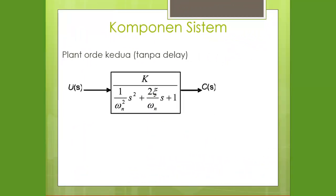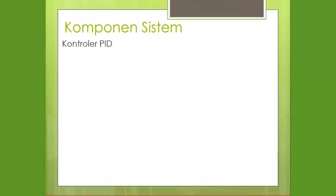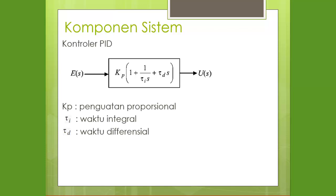Plan order kedua tanpa delay sebagaimana pada gambar, bloknya adalah K per (1/ωn² · s² + 2ζ/ωn · s + 1), dengan input U(s) dan output C(s). Di mana K adalah gain overall, ωn adalah frekuensi alami redaman, dan ζ adalah rasio redaman. Untuk kontrol PID, bloknya adalah KP dikalikan (1 + 1/(TOI·s) + TOD·s), dengan E(s) adalah error dan U(s) adalah sinyal kontrol menuju plant. KP adalah penguatan proporsional, TOI adalah waktu integral, dan TOD adalah waktu diferensial.